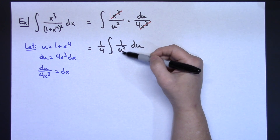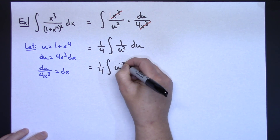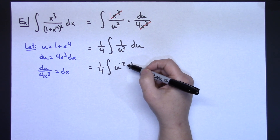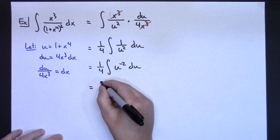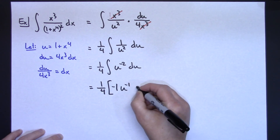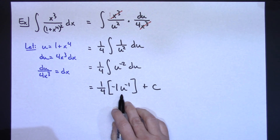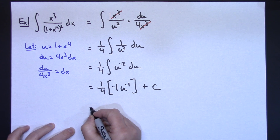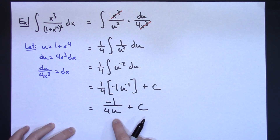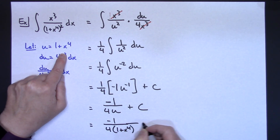Now I'm all in terms of u, so I did make the right u substitution. To integrate 1 over u squared, I'll move the u squared up and make it negative, giving me 1/4 times the integral of u to the negative 2 du. Adding 1 to the exponent gives me negative 1, and pulling that down in front gives a negative 1. So I have 1/4 times negative 1 times u to the negative 1 plus c. Moving u to the bottom and multiplying: negative 1 over 4u plus c. Then substituting back in: negative 1 over 4 times (1 plus x to the fourth), plus c.